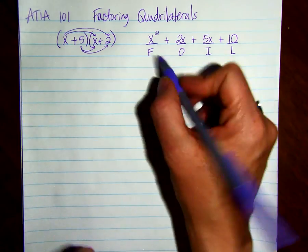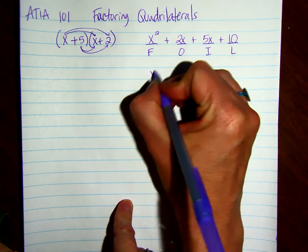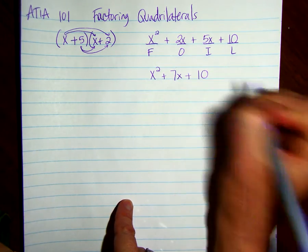When we add the like terms, we get x squared plus 7x plus 10.